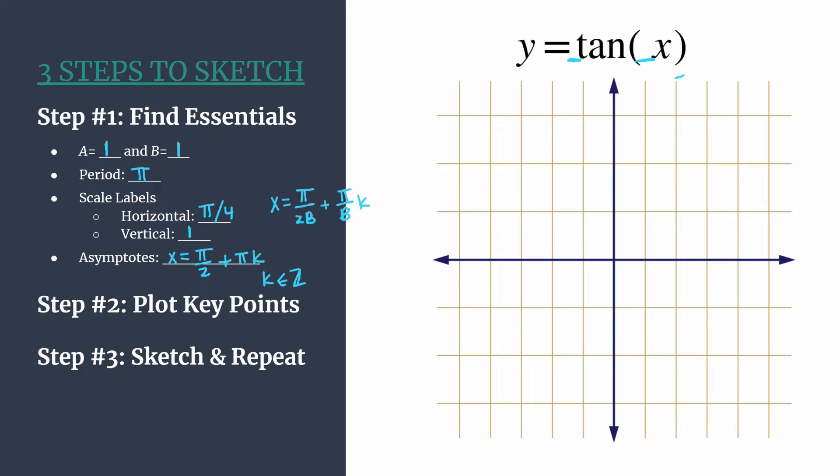So we have all our information. Let's label our axes, and then we'll be ready to go on to the next step. Let's start by labeling our horizontal axis, counting by π over four. So we count one π over four, two π over four, which reduces to π over two, three π over four, four π over four, which reduces to π.